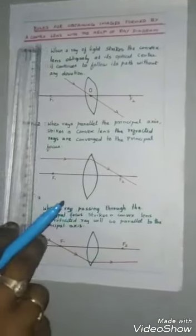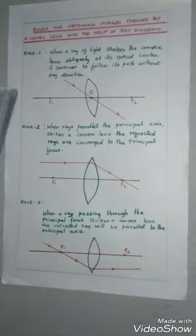Next we are going to see the rules for obtaining images formed by convex lens with the help of ray diagram. Rule one, when a ray of light strikes the convex lens.